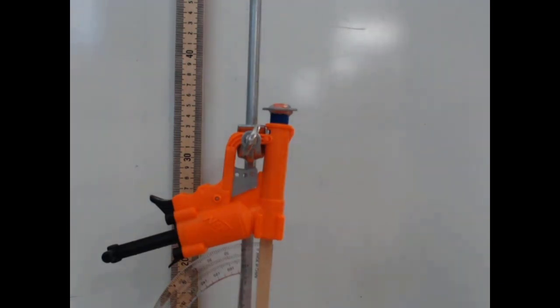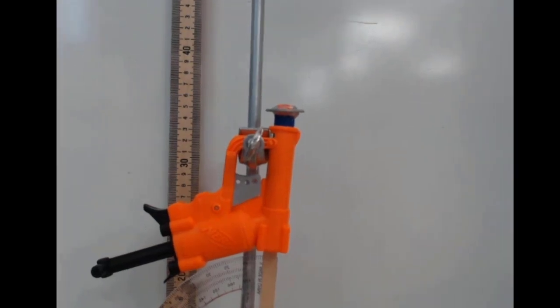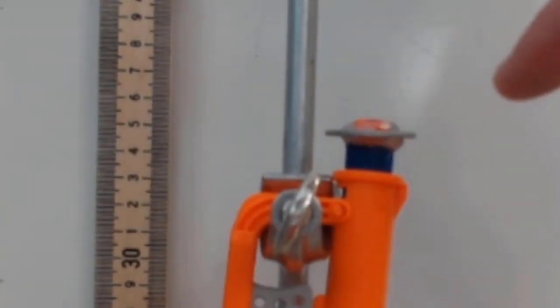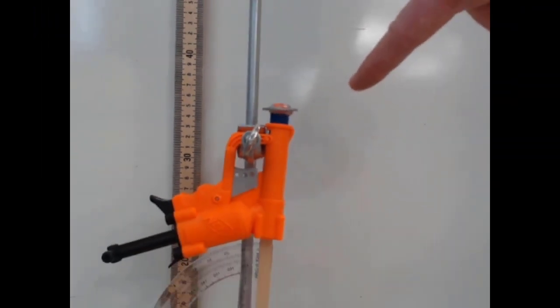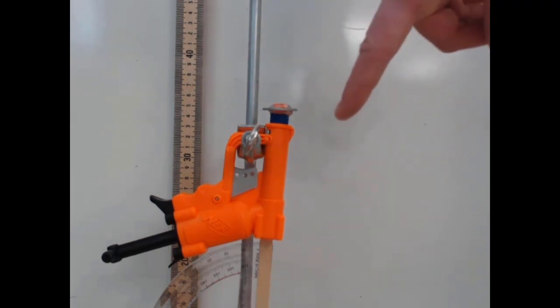Our meter sticks go all the way down to the ground, but the Nerf dart is going to be launching from this height right here. This is our first meter stick. The bottom of this meter stick is on the ground, and this is the height where the Nerf dart is being launched.